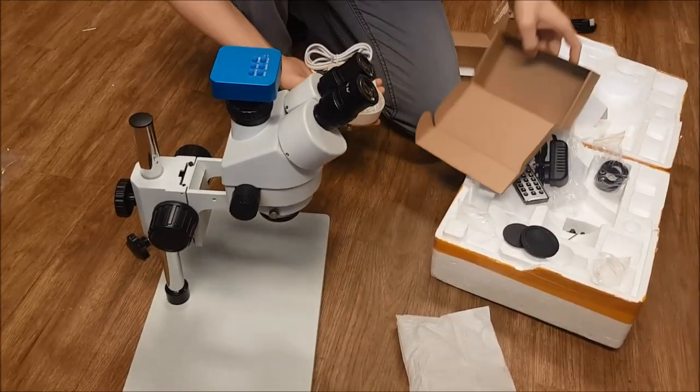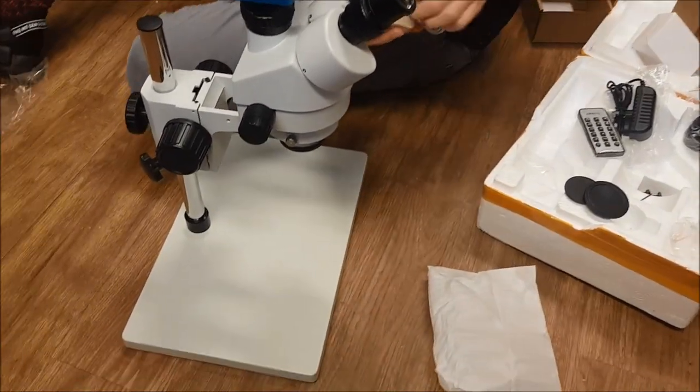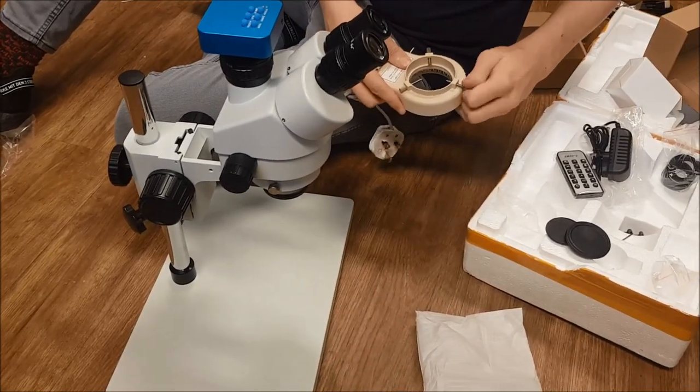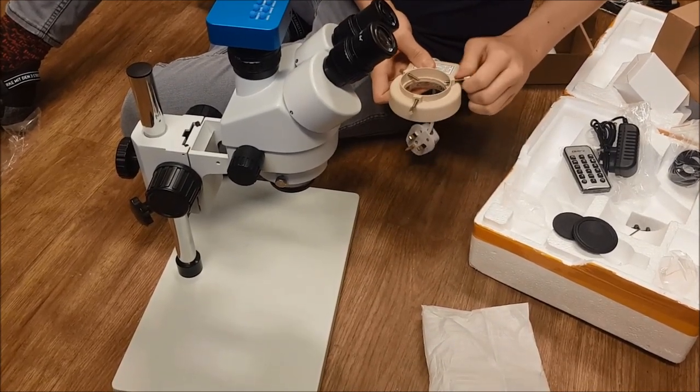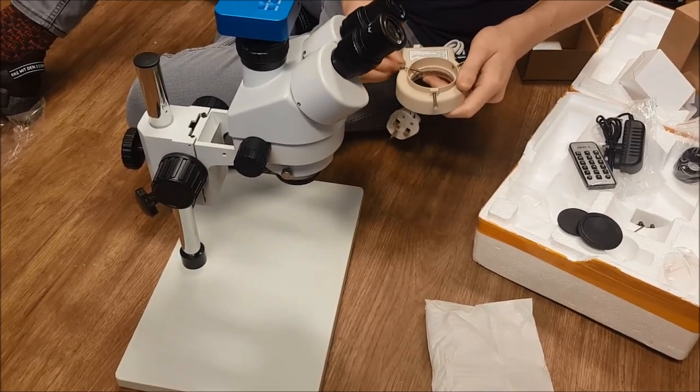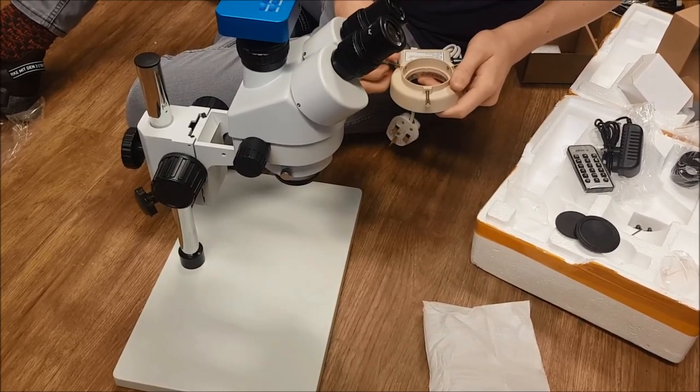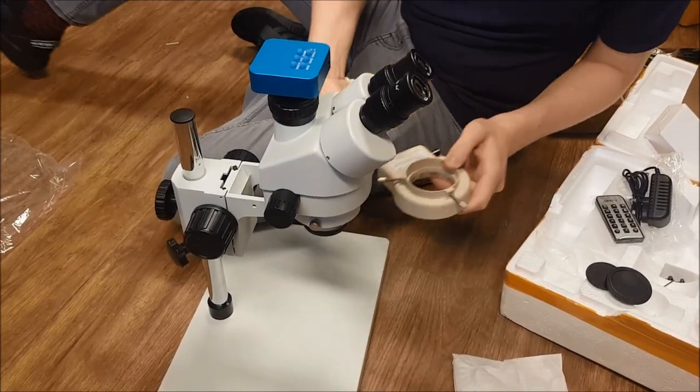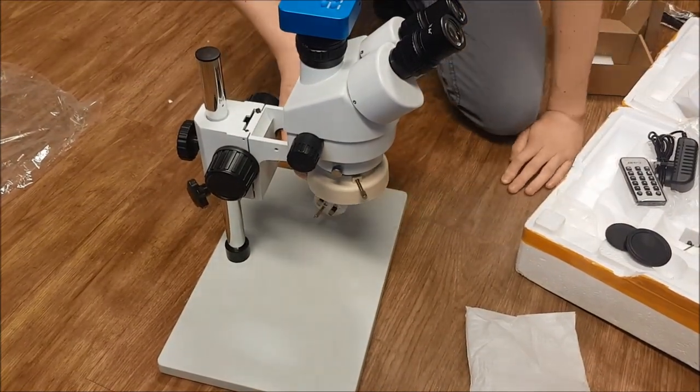Here we have the ring lights. This will attach to the lower part of the microscope. Just want to loosen these, then just attach that like so and tighten evenly.